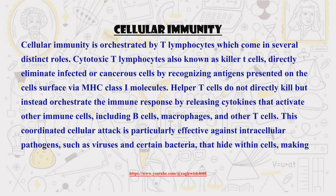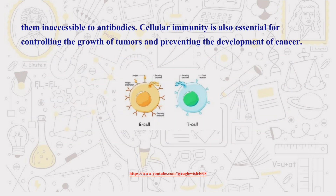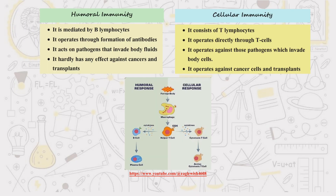Cellular immunity is more like sending in a specialized strike force. Instead of antibodies, specialized immune cells called T lymphocytes directly attack infected cells, tumor cells, or foreign tissues. Here's a concise table highlighting the differences between humoral and cellular immunity.